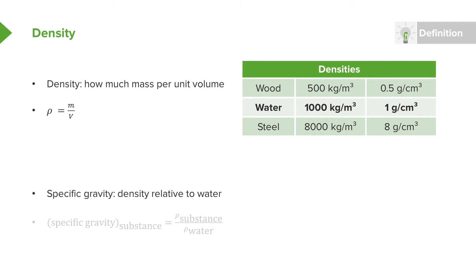We could also define a specific gravity. And this is simply a way of measuring density relative to water. So if our density is more than water or less than water, we can tell this very quickly. So we define the specific gravity of any substance as the density rho of that substance divided by the density of water.